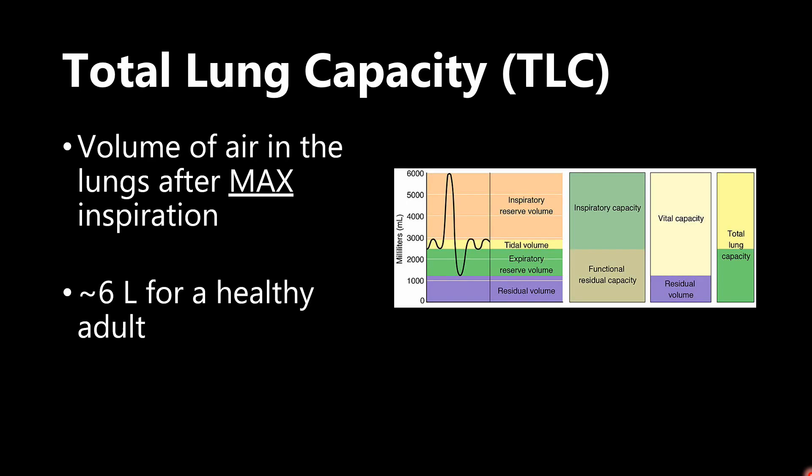But let's start here with total lung capacity, TLC, which we have right here. This is essentially the volume of air in the lungs after a max inspiration. This is the total amount of air that is ever going to fit in your lungs, and like I already said, 6 liters for a healthy adult. So this entire curve here is our total lung capacity, and we see that it is 6 liters.